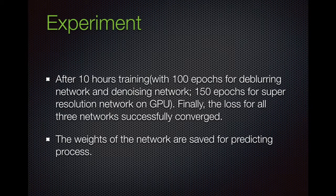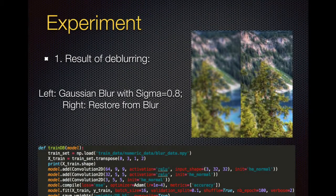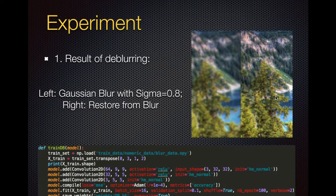After 10 hours of training — with 100 epochs for the deblurring and denoising networks, and 150 epochs for the super-resolution network — on GPU, I found the loss for all three networks successfully converged. I then saved the weights of the networks for the prediction process. Here are some results: the first is the result for deblurring. The left side is the picture with Gaussian blur with sigma 0.8. I put these pictures through the CNN and restored them, and we can find the textures are much clearer.